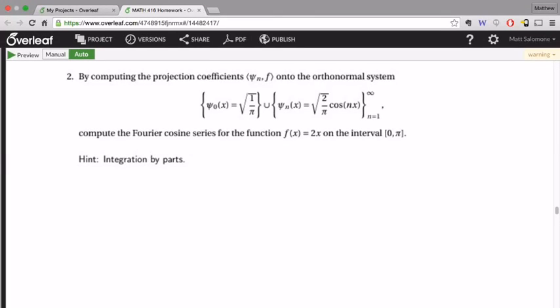So the question is, if I have a function, in this example f of x equals 2x, and I'm using projections onto this orthonormal basis, orthonormal system, to determine its Fourier cosine series on the interval from 0 to pi.